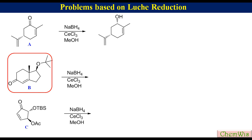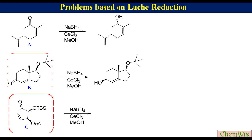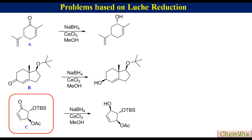In compound B, attack of the reducing agent preferentially occurs from the bottom face to avoid the steric hindrance with the methyl group, generating the corresponding alcohol. In compound C, the attack preferentially occurs from the bottom face to avoid the steric hindrance with the acetoxy group, producing the alcohol cis to the acetoxy group.